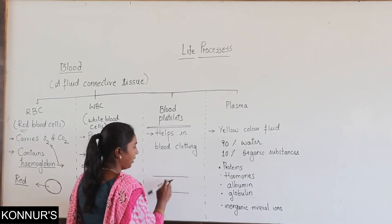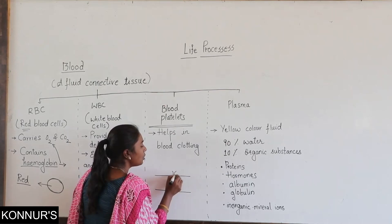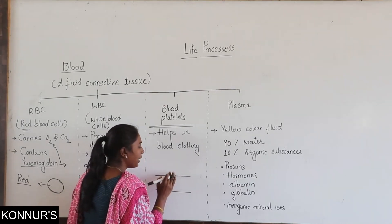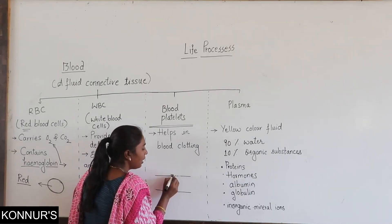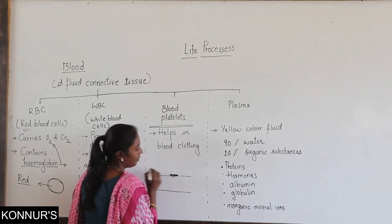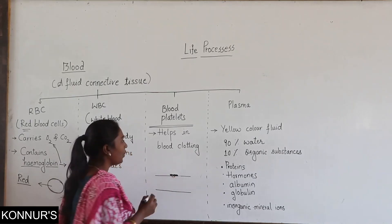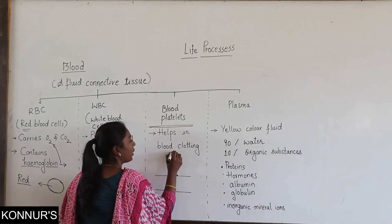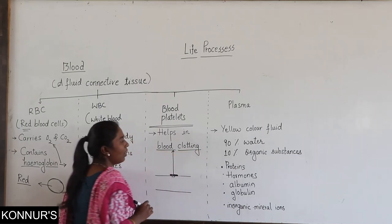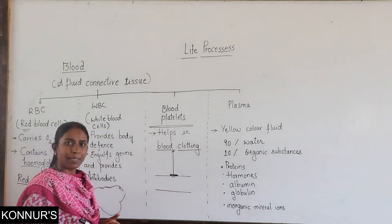If this is your hand and you get a minor injury, the blood oozes out of your body. Then after some time, you will find that a solid structure has formed over the wound. This formation of a solid structure we call blood clotting. What do we call it? It is called blood clotting.